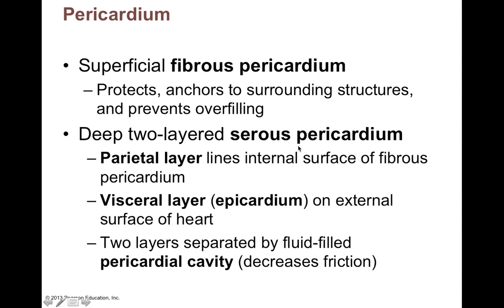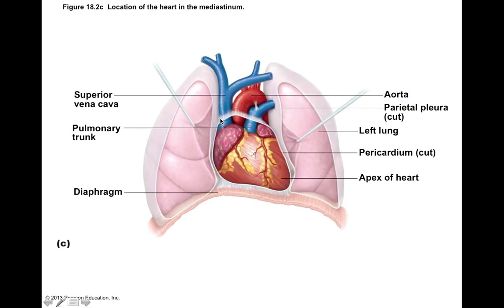The fibrous pericardium prevents overfilling — that whitish layer we saw on the last slide is the fibrous pericardium. It's pretty tough. We didn't see it on our sheep hearts during dissection because they remove it, but there would be a fibrous pericardium there. If you did a thoracotomy and looked down into the thoracic cavity, you wouldn't just see a heart sitting there — you'd see it inside this fibrous sac. You'd need to cut that sac to even see the heart.